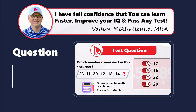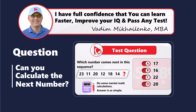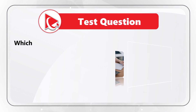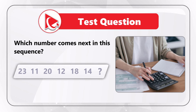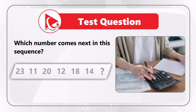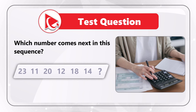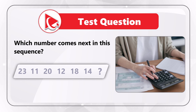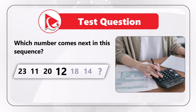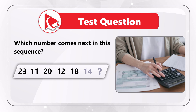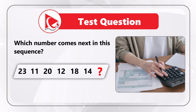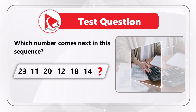What's interesting about the next question is that it truly tests your analytical skills. You need to determine which number comes next in the sequence. You're presented with a sequence of six numbers where the seventh is missing: 23, 11, 20, 12, 18, 14. Then comes the missing number, which you need to select out of four possible choices.